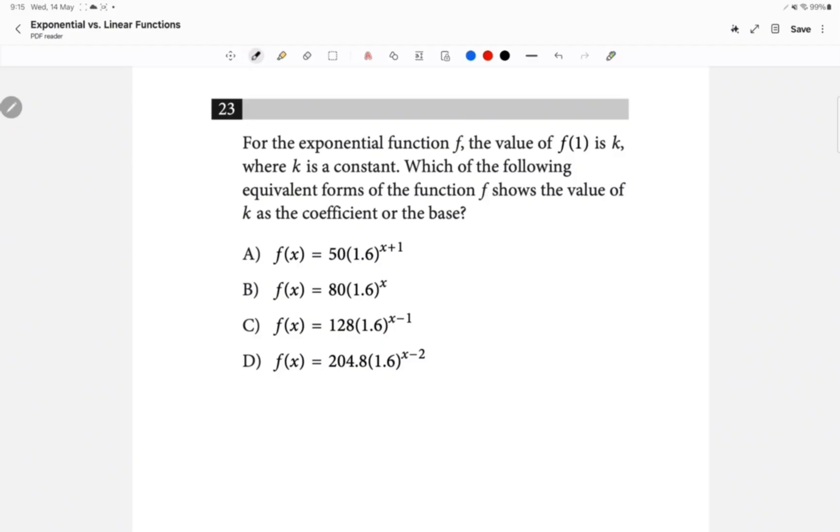So for the exponential function f, the value of f of 1—exponential function means Y equals A times B to the power of X—the value of f of 1, that means instead of X you put 1, is K. So instead of Y, you put K. So K equals A times B. Which of the following equivalent forms of the function f shows the value of K as the coefficient or the base? So whenever they say is the coefficient or the base, they basically mean that the thing inside the bracket must become 1. And for the thing inside the bracket to become 1, the power has to be 0.